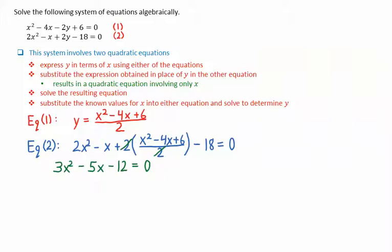To solve this quadratic equation, we could factor it if it factors, or we could use the quadratic formula. This one does factor. We're looking for numbers that multiply to give negative 36, 3 times negative 12, and add to give negative 5. The numbers that work here are 4 and negative 9.